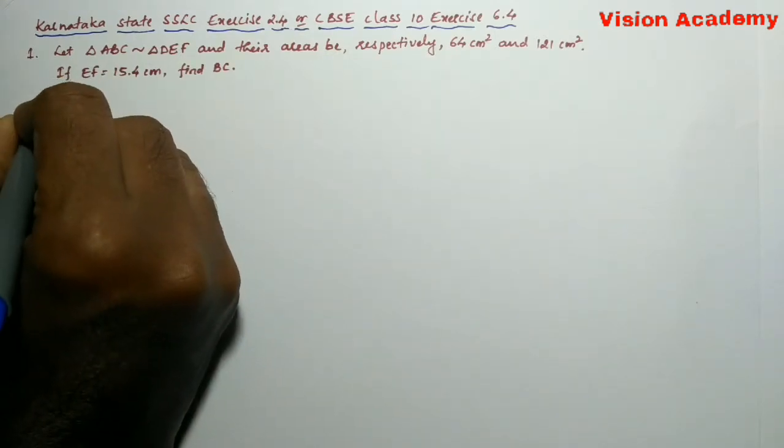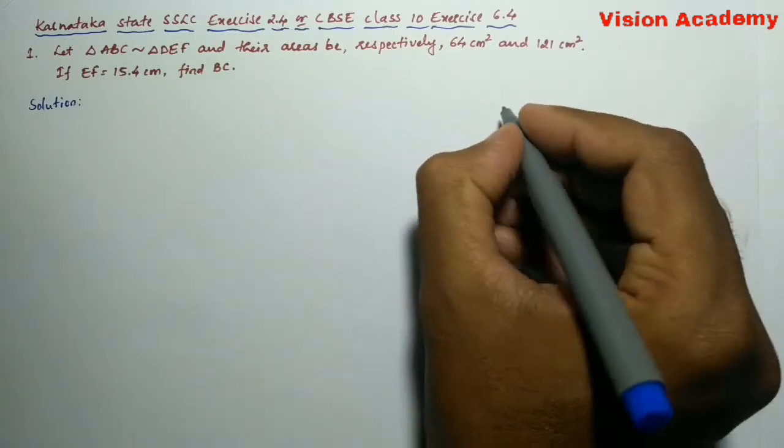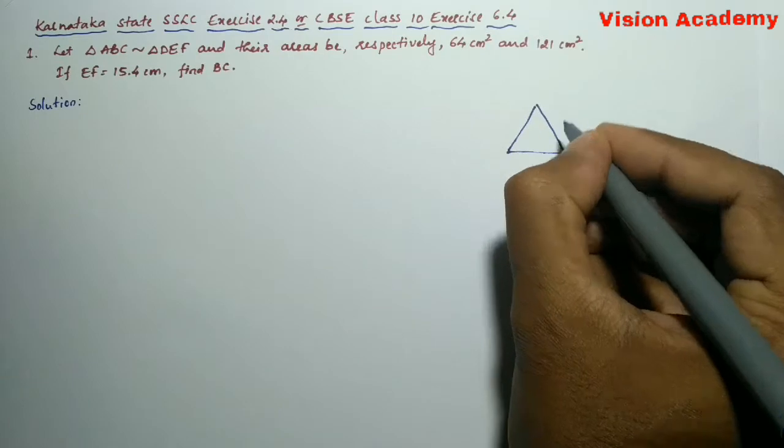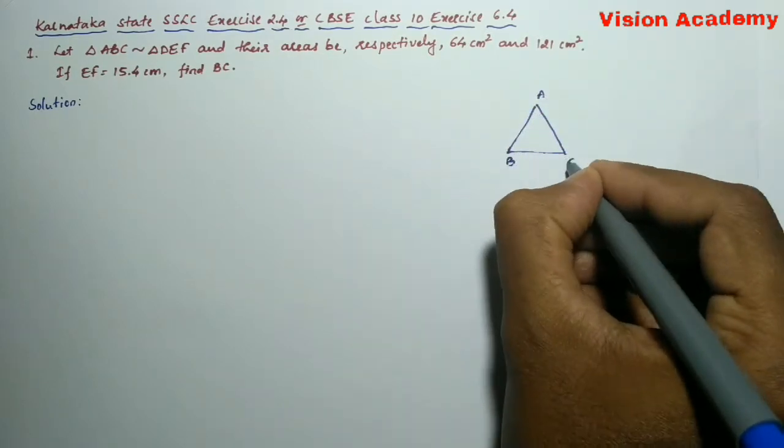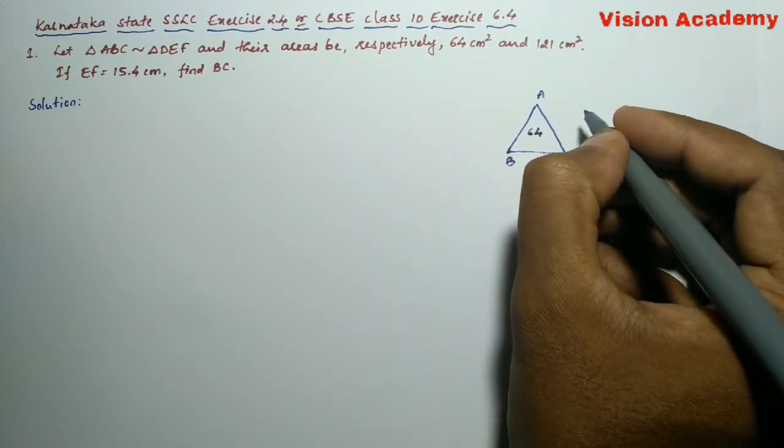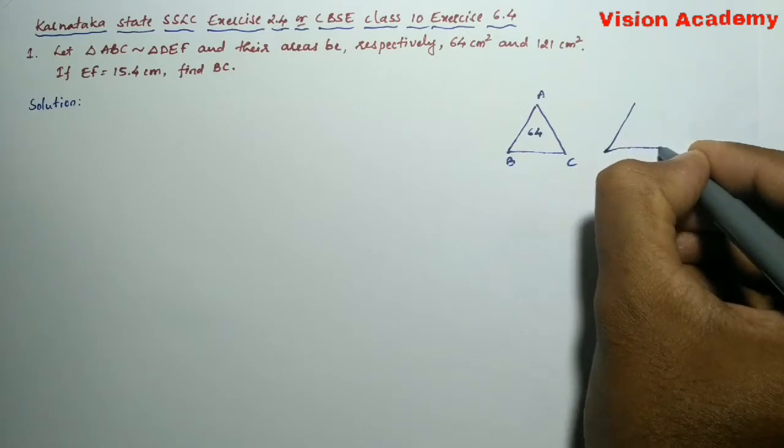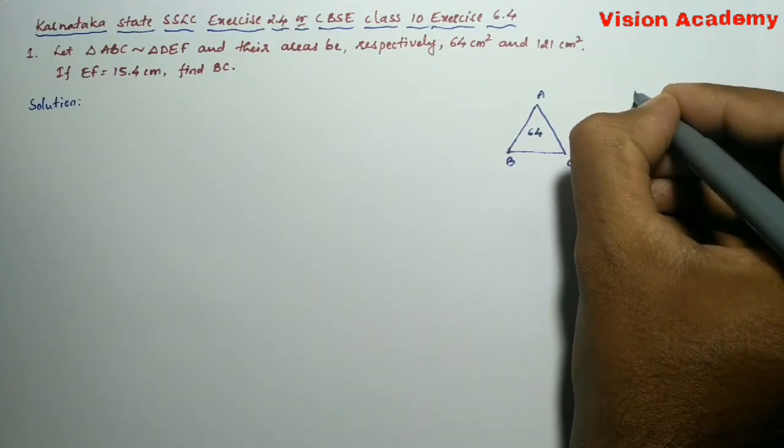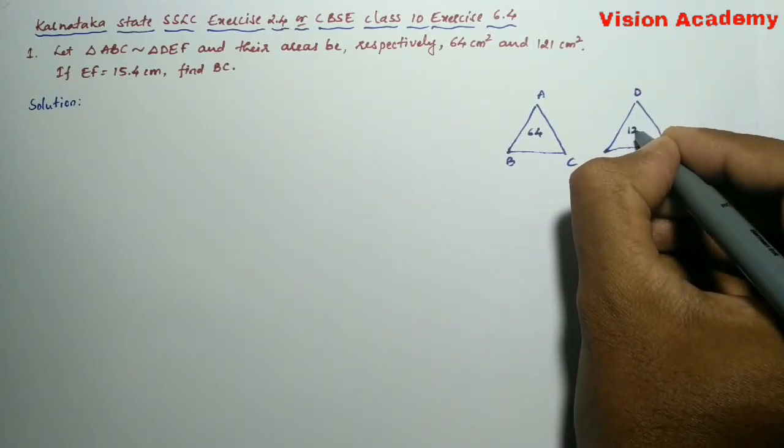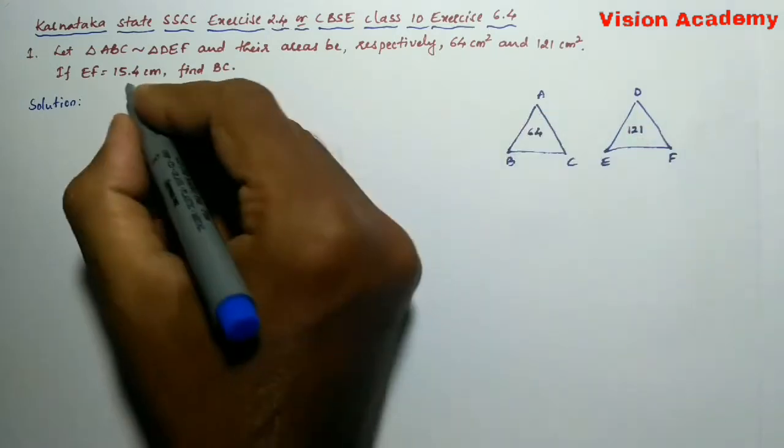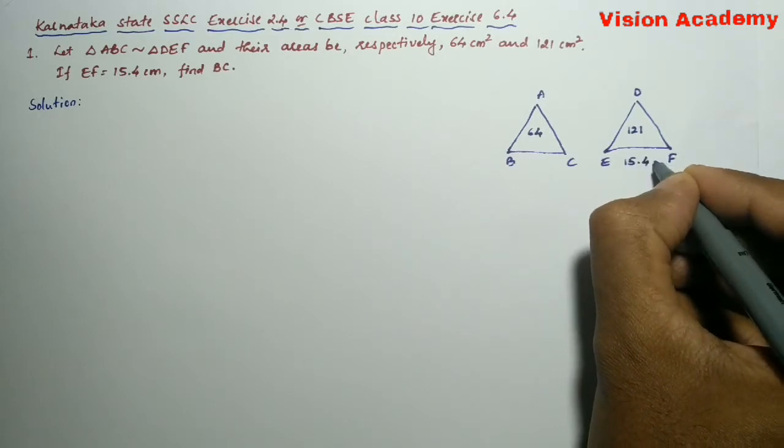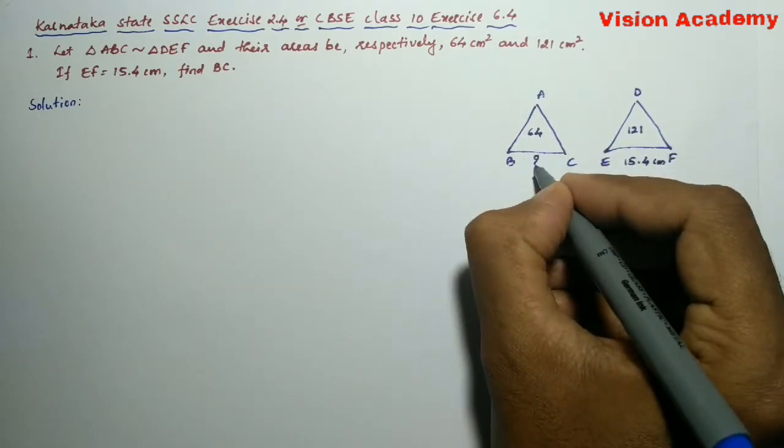Now let us find the solution for the given problem. So let us draw two triangles: ABC whose area is 64 cm² and DEF whose area is 121 cm². They have given here EF is 15.4 cm. We need to find BC.